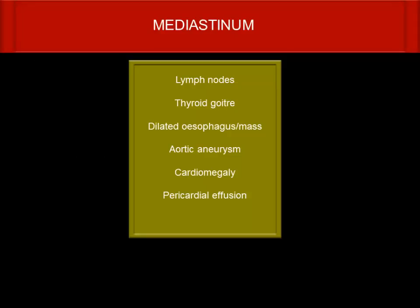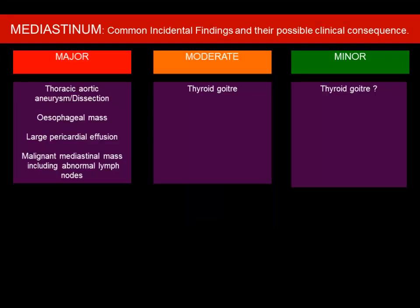Coming to the mediastinum, you need to look for lymph nodes, enlarged thyroid, dilated esophagus, esophageal mass, aortic aneurysm — which is the most common and must be documented — and cardiomegaly or pericardial effusion. For major findings: a thoracic aortic aneurysm is reported based on size — if more than 5 centimeters. You have to classify them into mild, moderate, and severe.